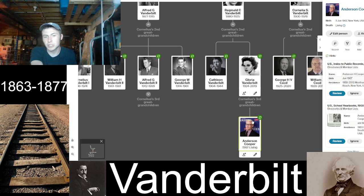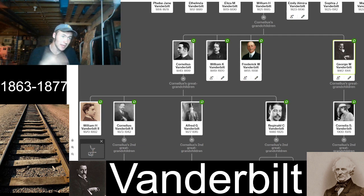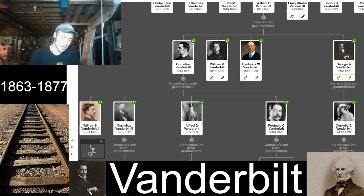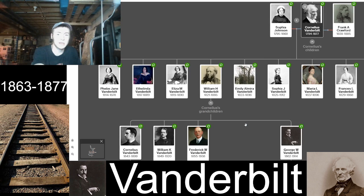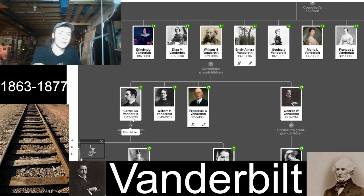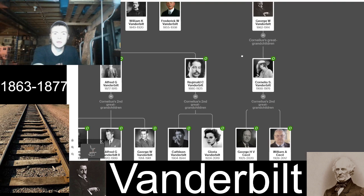Anderson Cooper actually had to work to get where he was, because by the time he was born, the Vanderbilt wealth was largely gone. The family had spent it all — notably, George Washington Vanderbilt's construction of the Biltmore cost hundreds of millions in today's dollars. The richest family in the United States essentially went broke within a few generations, largely because most descendants never worked and just spent the inherited fortune.